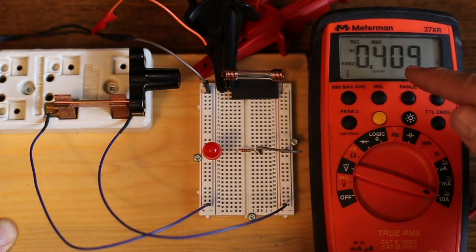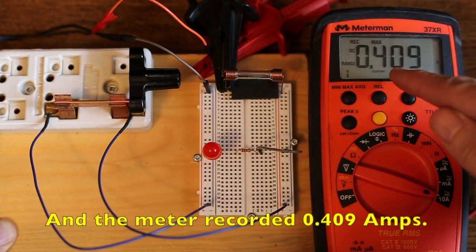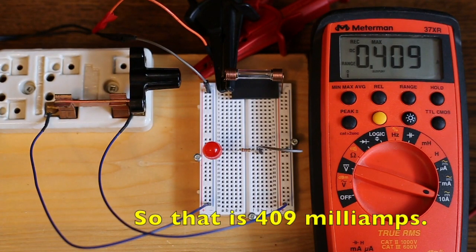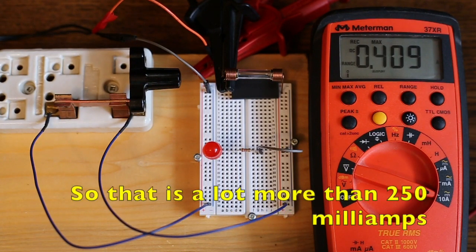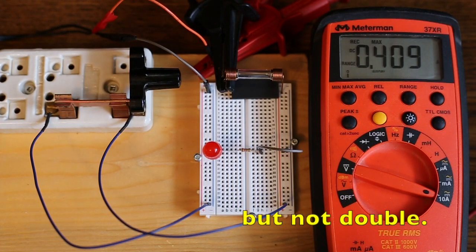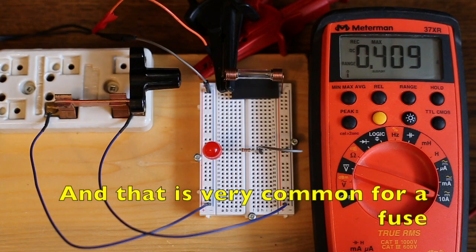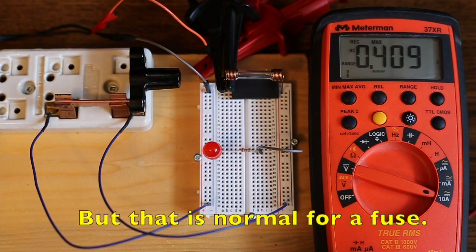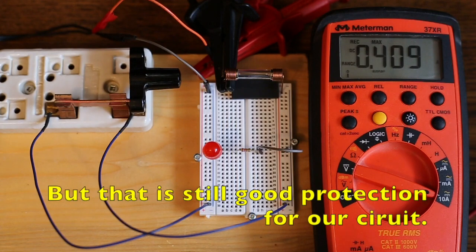And the meter recorded 0.409 amps. So that's 409 milliamps. So that's a lot more than 250 milliamps, but not double. And that's very common for a fuse to, when it blows, it allows a much larger current than its rating. But that's normal for a fuse. But that's still good protection for our circuit.